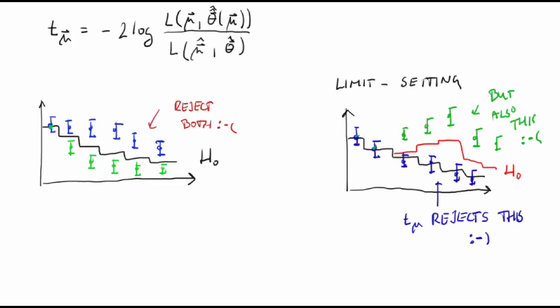In analogy with the test statistic for discovery, let's define the one-sided test statistic for exclusion. Q sub mu is equal to T sub mu if mu hat is lower than mu.